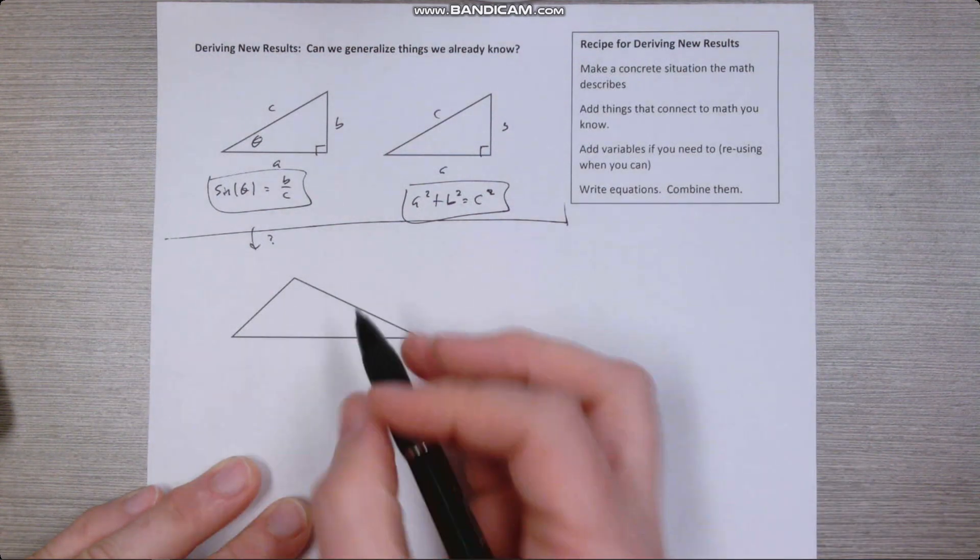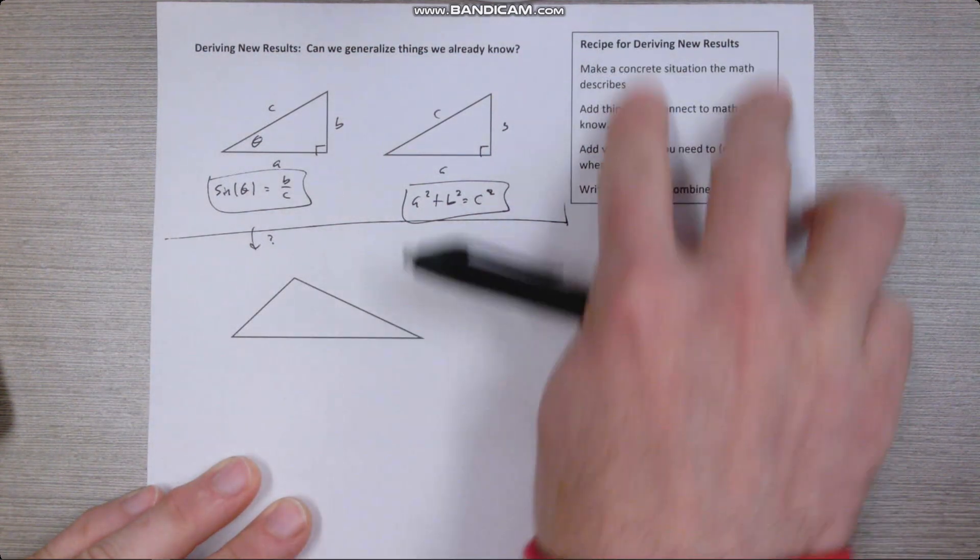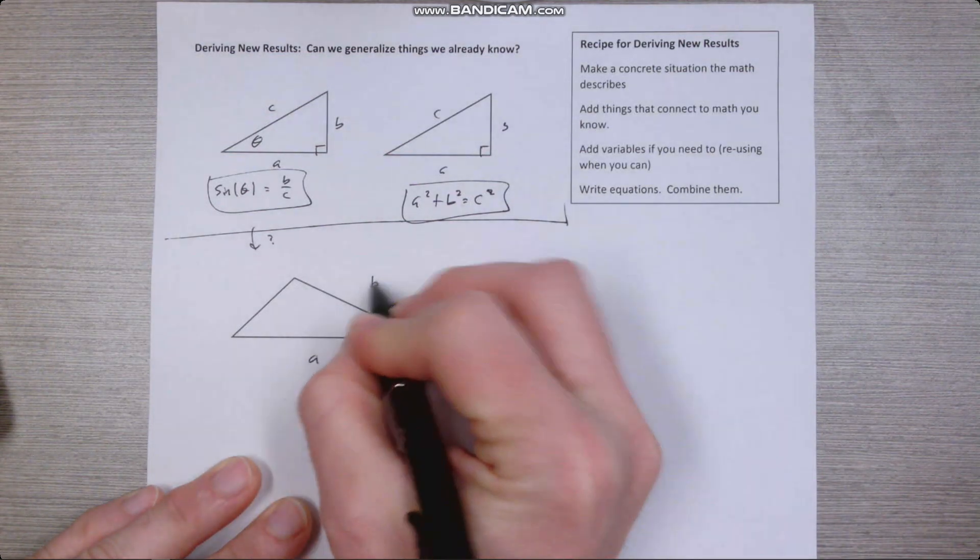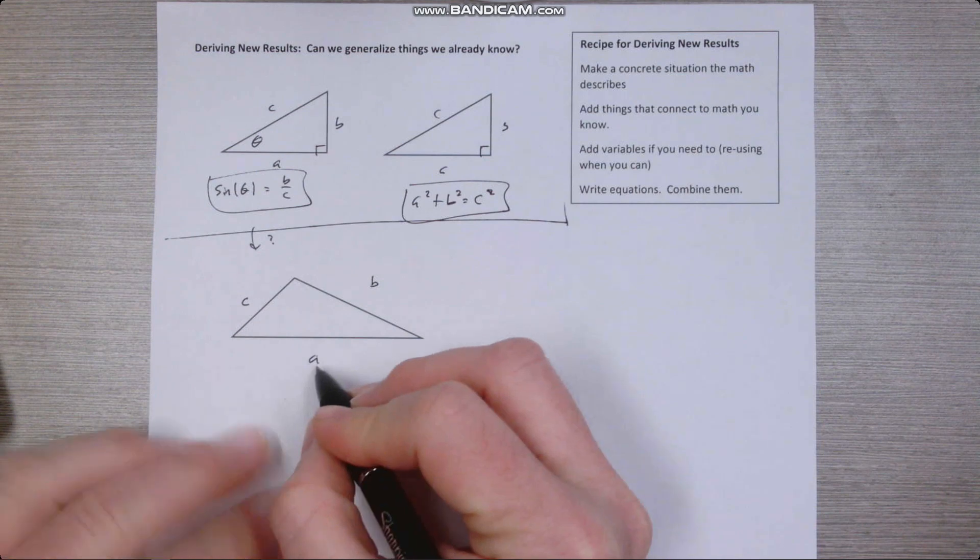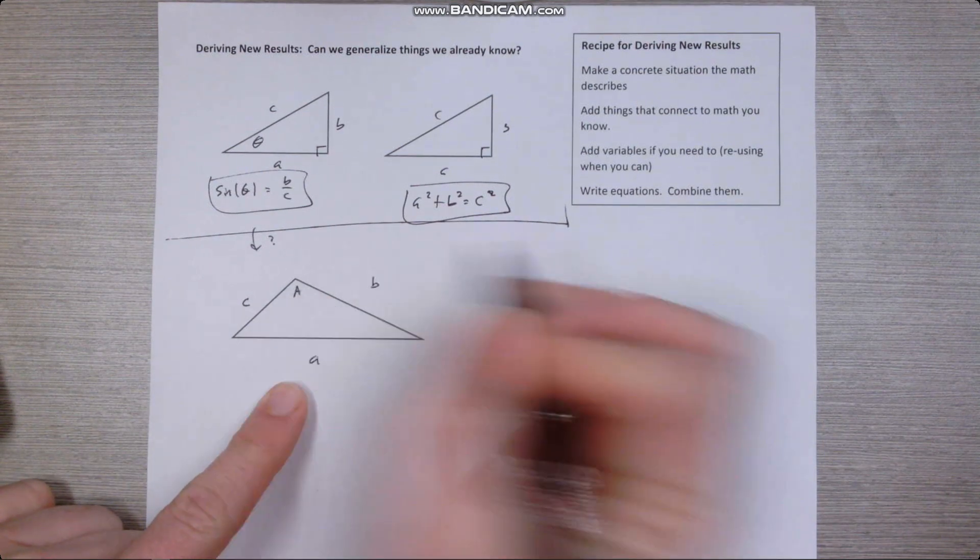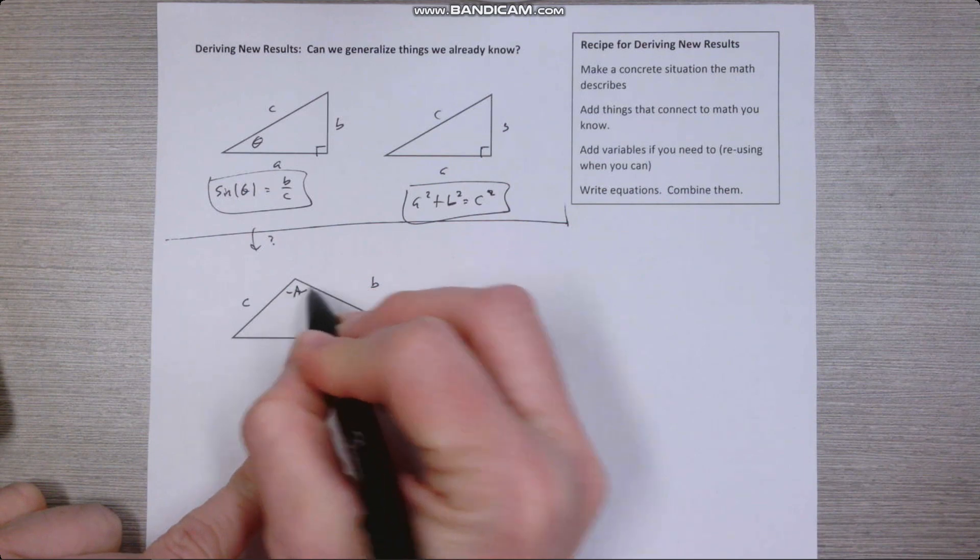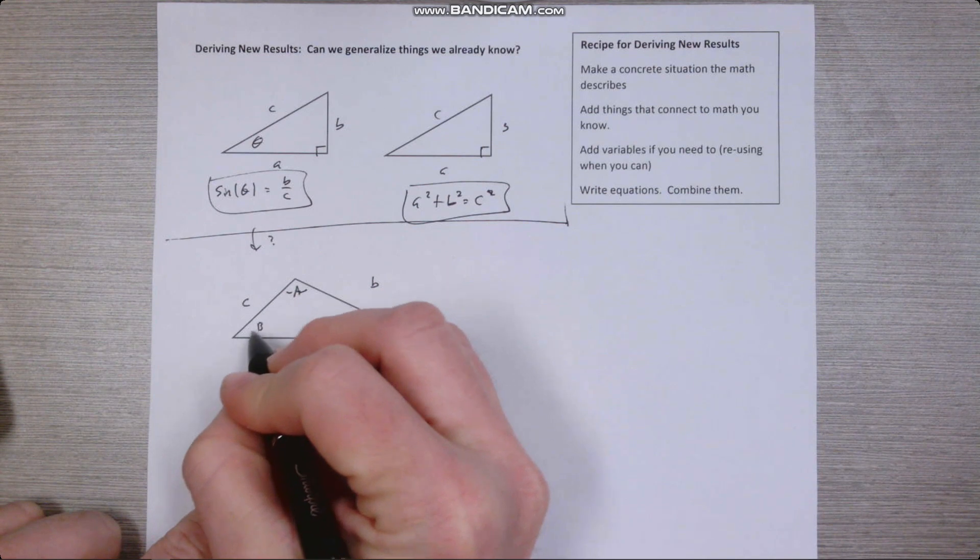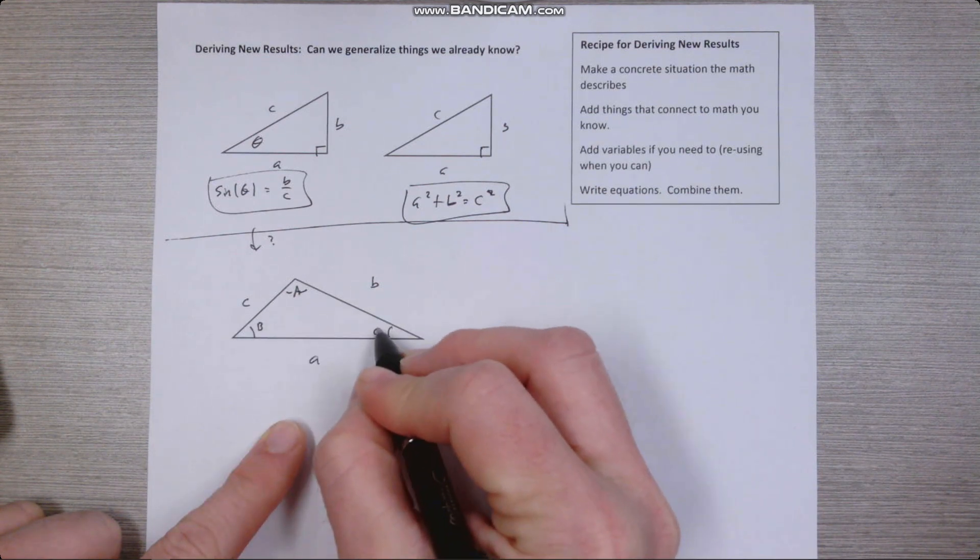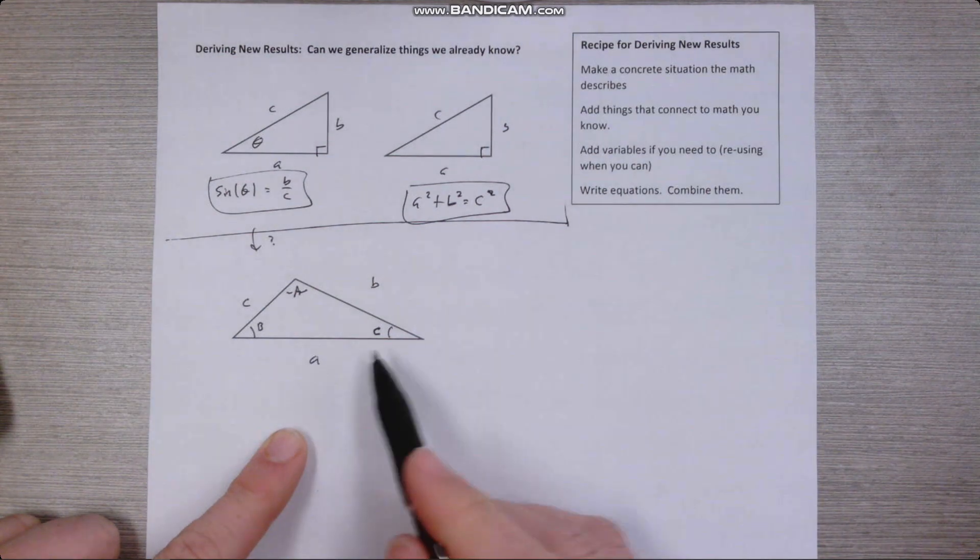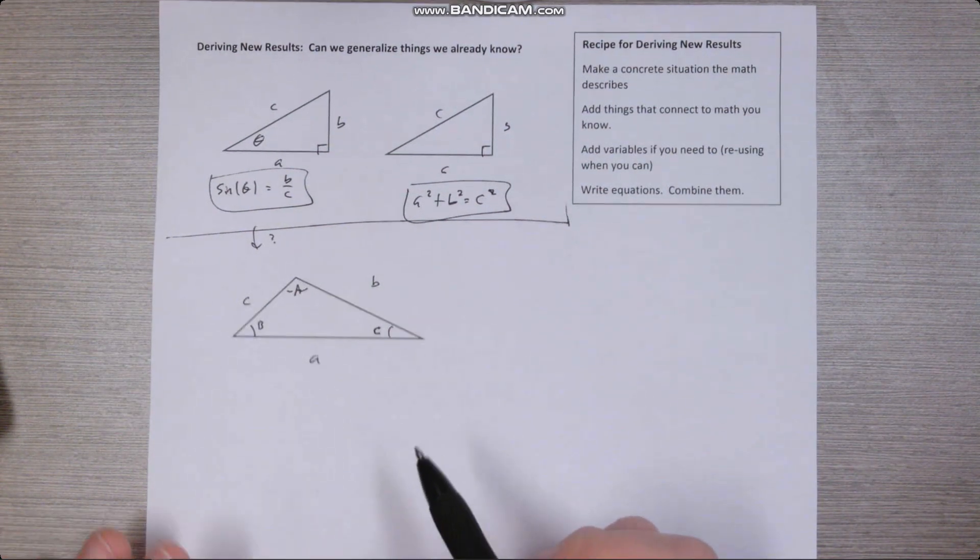Let's go ahead and label the sides and then we'll set up what's our recipe for deriving new results. So we'll label this side A and B and C. It's often conventional to label the angle across from a side with a capital version of the same letter. So lowercase a is the side length, uppercase A is the angle. So here's capital B, here's capital C. I know my lowercase and capital look identical. You'll just have to let context tell you which one's an angle and which one's a side length.